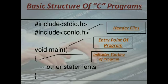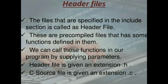Basic structure of a C program. Hash include stdio.h and hash include conio.h — these are the header files. Void main is the entry point of a program. Curly braces indicate the starting of a program. The files specified in the include section are called header files. These are pre-compiled files that have some functions defined in them. We can call those functions in our program by supplying parameters. Header files are given the extension .h, and C source files are given the extension .c.